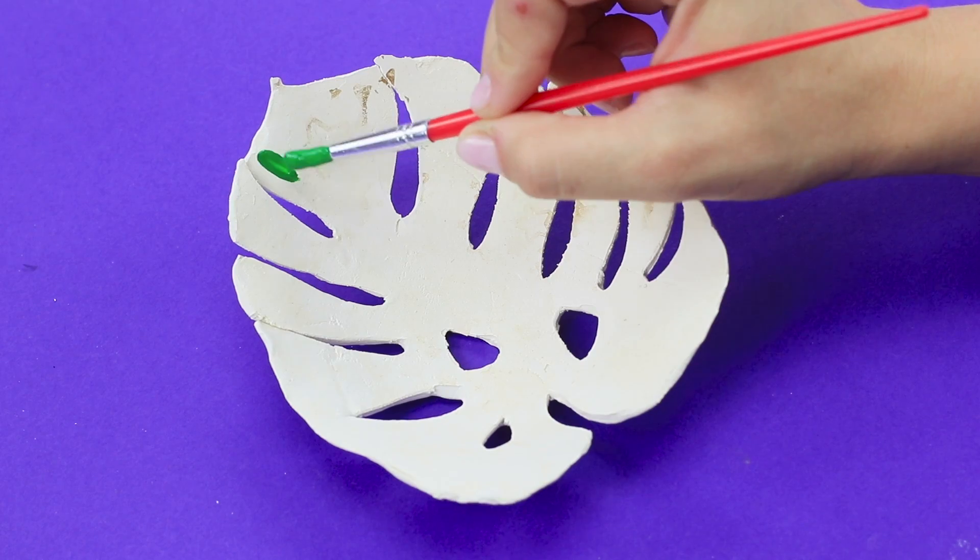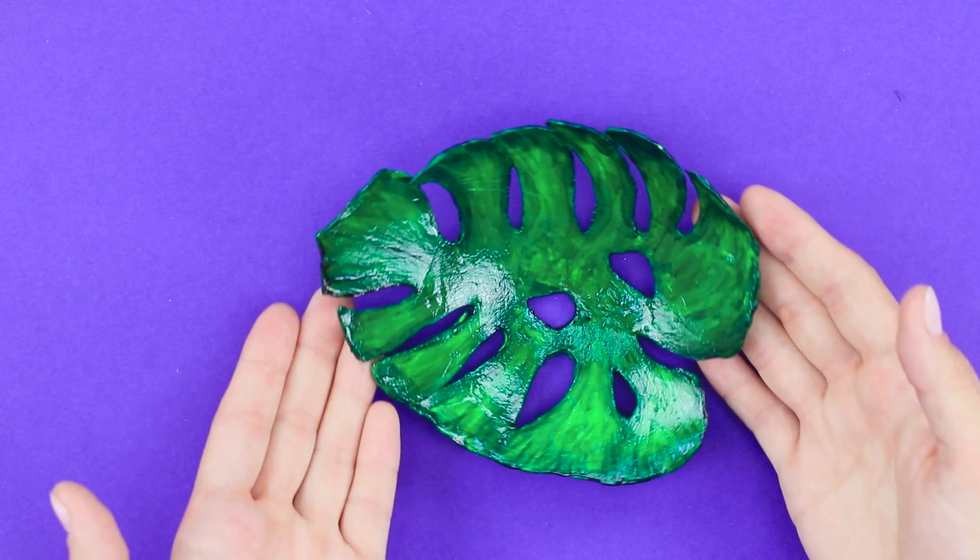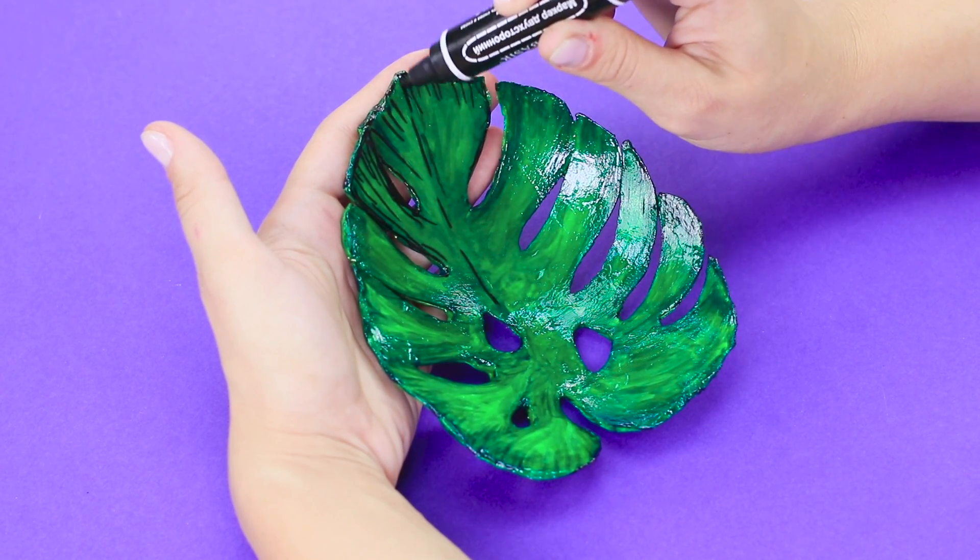Paint the leaf a juicy green. Draw the outline and veins with a permanent marker.